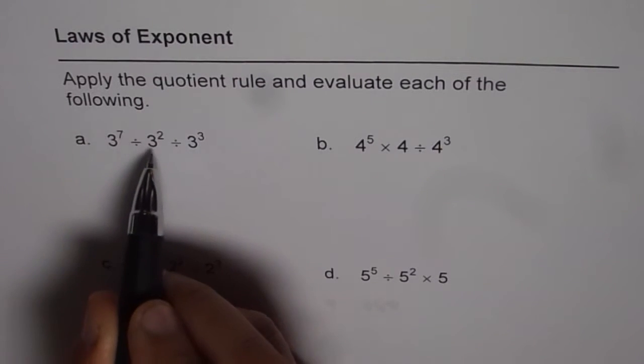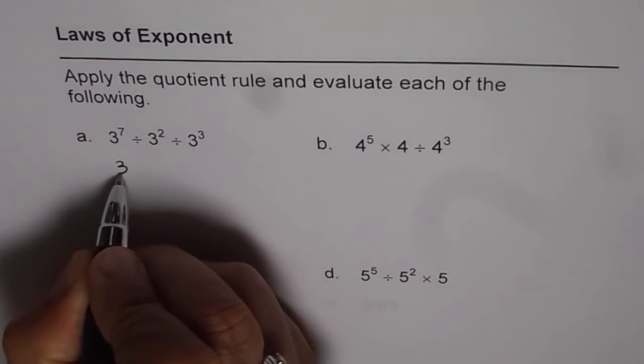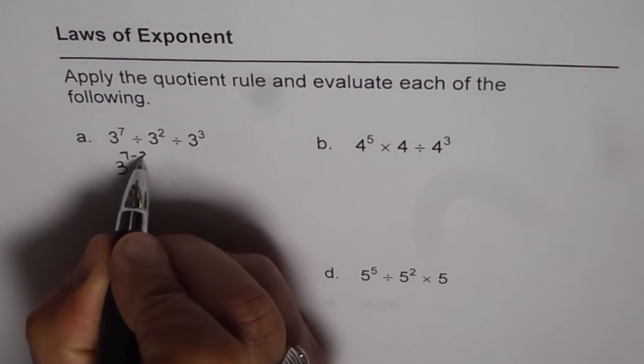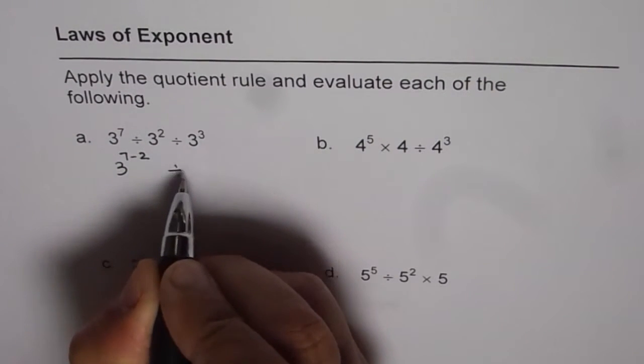3 to the power of 7 divided by 3 square will be 3 to the power of 7 minus 2 and then we have divide by 3 cube.